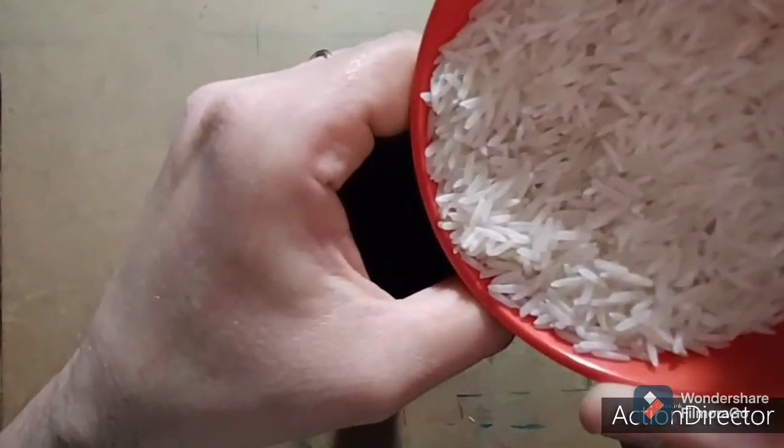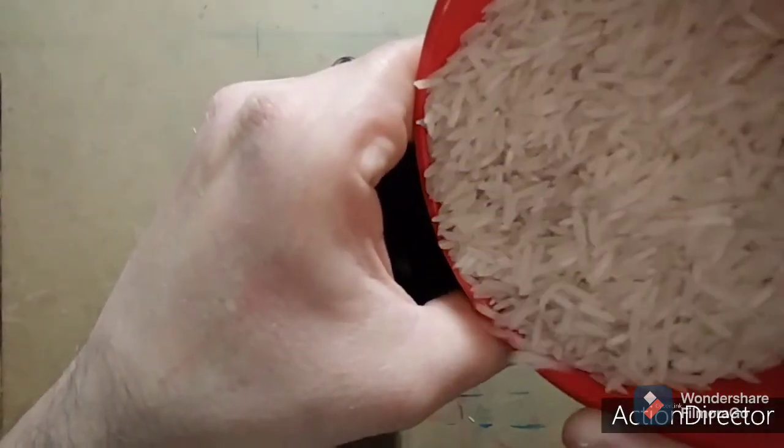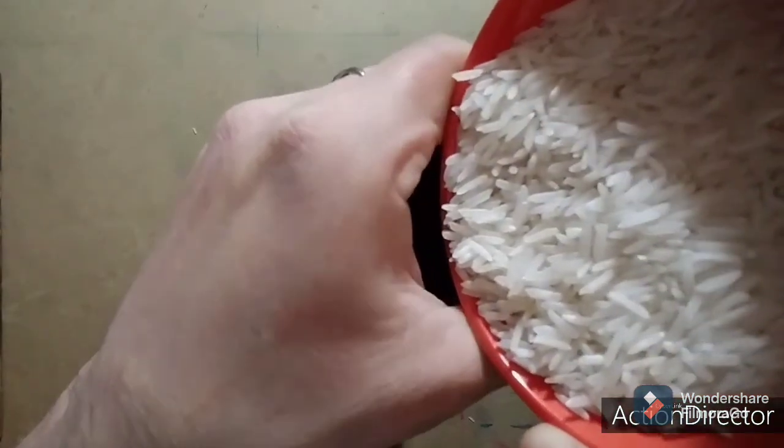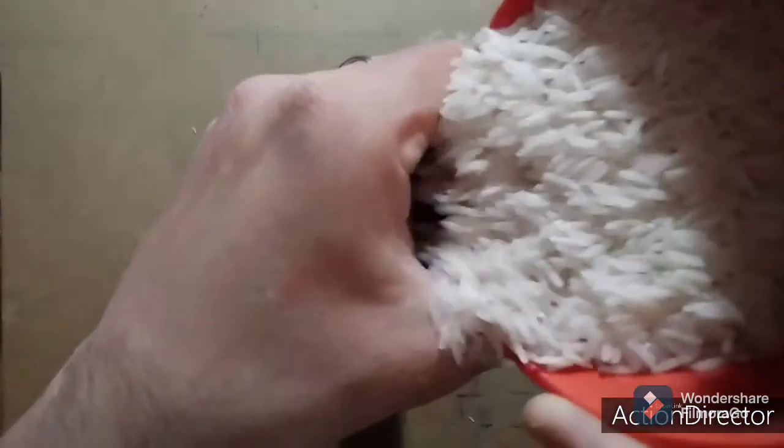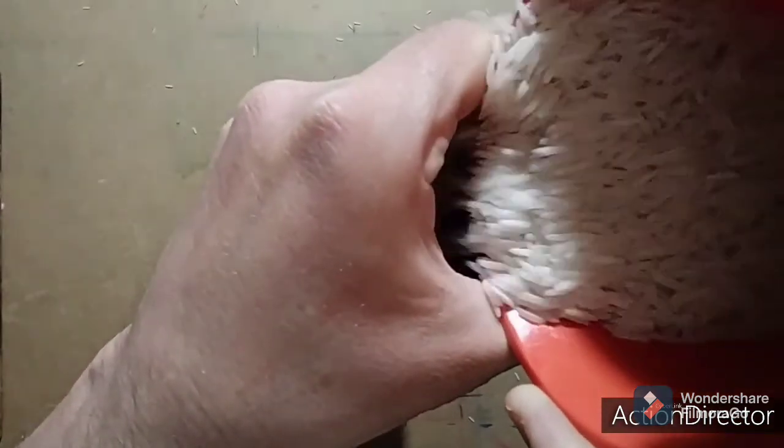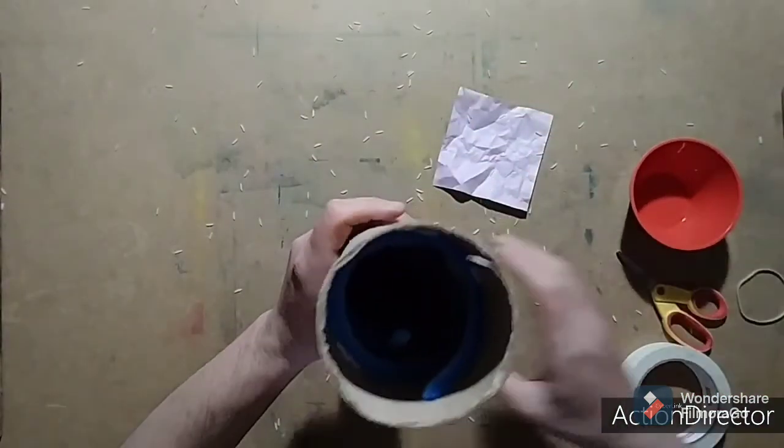Oh, I forgot one step. You need to put the rice inside the tube first. Now, this can be a bit messy, so do this carefully. I dropped a bit of the rice when I did this. You may want to use a funnel.